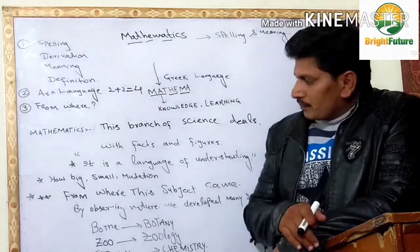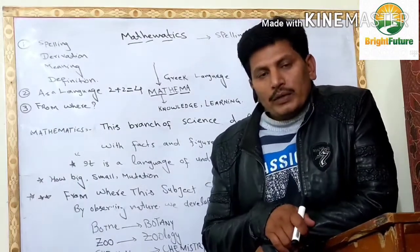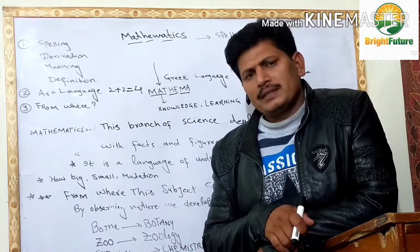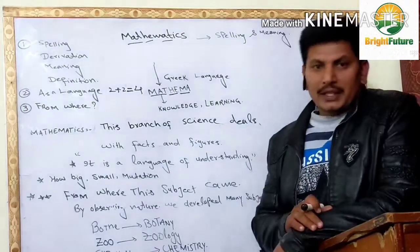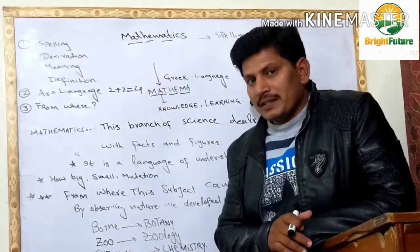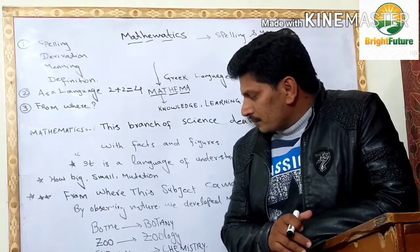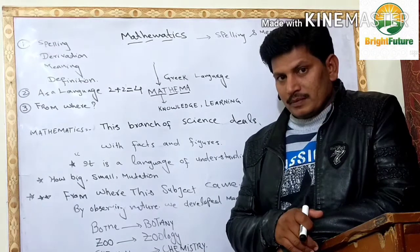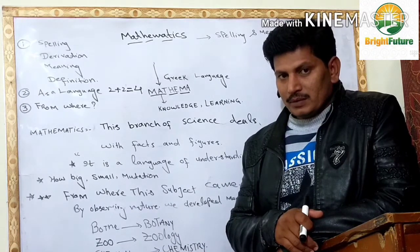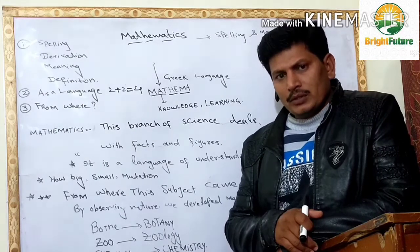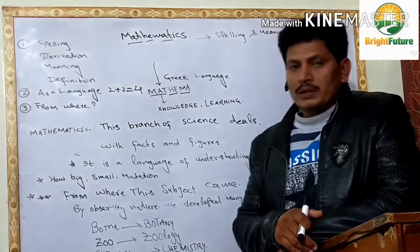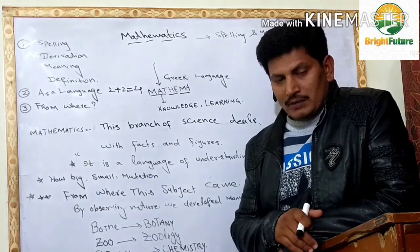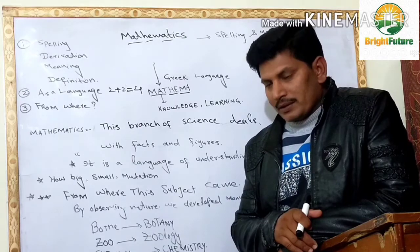We are going towards another topic: from where did this subject come from? We will take some examples to understand this. For example, the word botany — bottle means pasture, a grazing place. It has so many plants, and from this word we developed a branch called botany, in which we discuss plants.